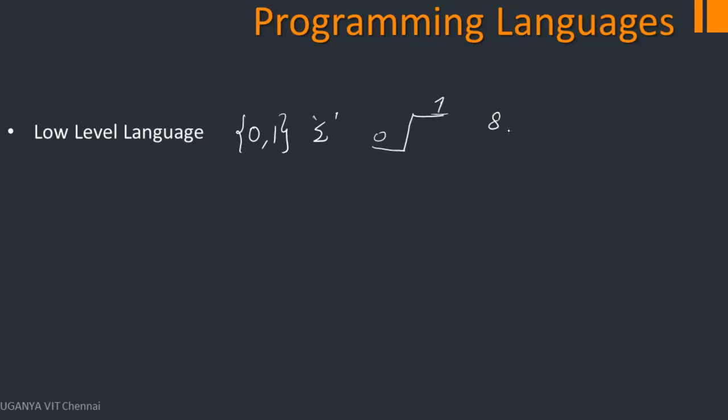If I want to represent something like sum equals 4 plus 6, how do I represent this? Four has to be represented in binary which will be 100. Six to be represented in binary which is 110.